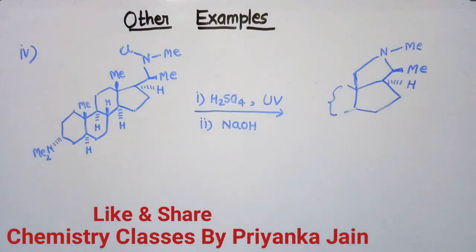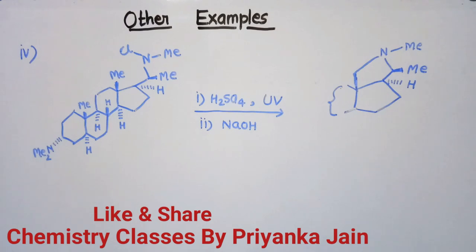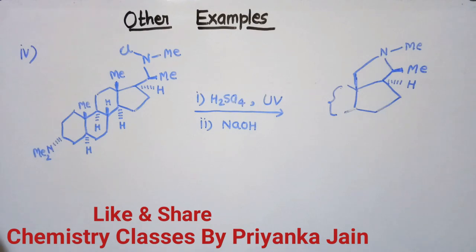So this is all about the Hoffman-Löffler-Freytag reaction. The reaction is quite simple and easy to understand. You simply need to identify which delta hydrogen atom is suitable for the reaction — then you can easily find out which will be the major product. Thank you.